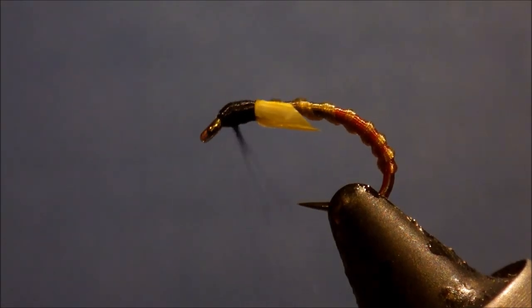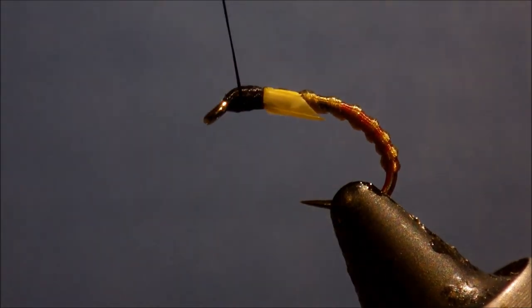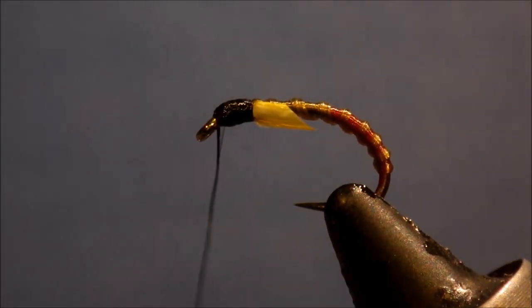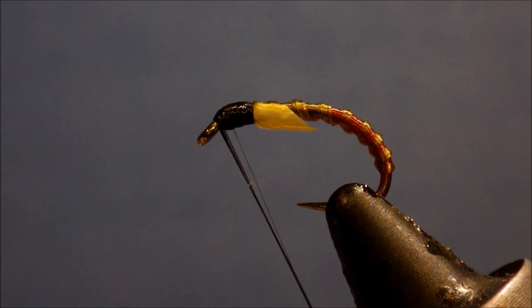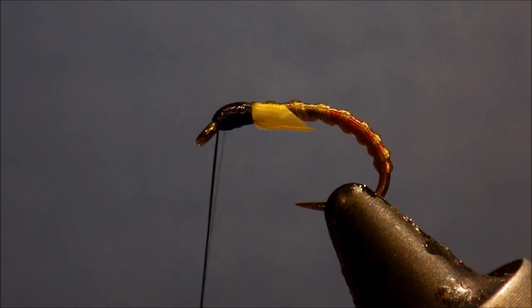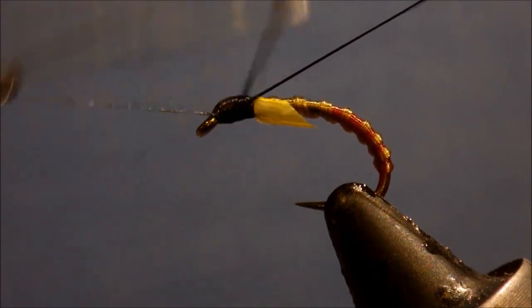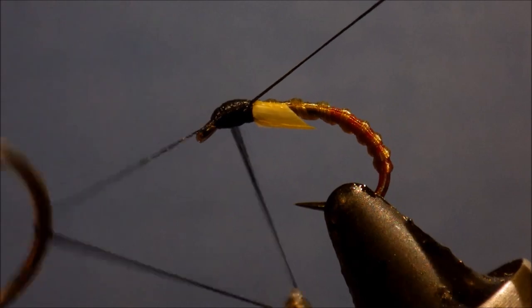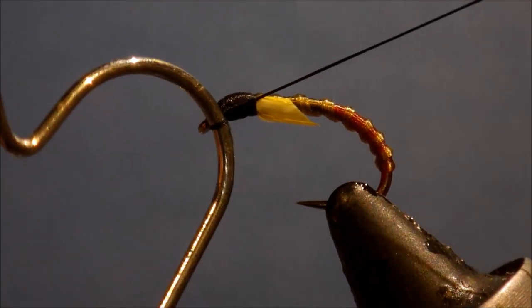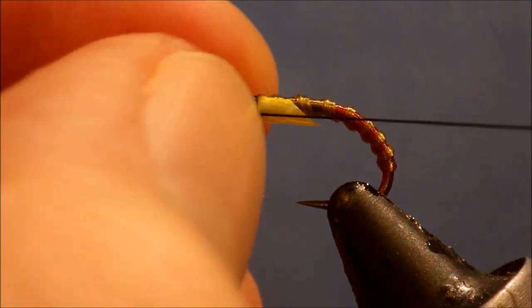And all you've got to do is sort of build up a smallish head, and you don't want it too big, but you would still want a reasonably pronounced thoracic area. And then just got to come in and whip finish. Again, you can use your whip finish to help you build the shape of the head as you place the wraps kind of nice and tight.